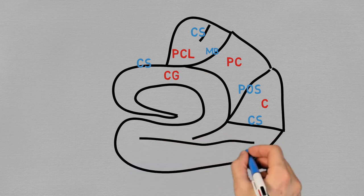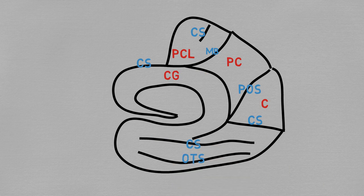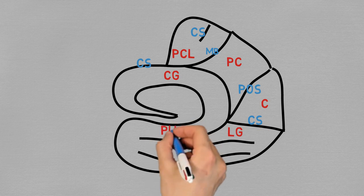And if we add this sulcus here, called collateral sulcus, and also the occipital temporal sulcus, we have defined the lingual gyrus, in the shape of a tongue, that's continuous with the parahippocampal gyrus.